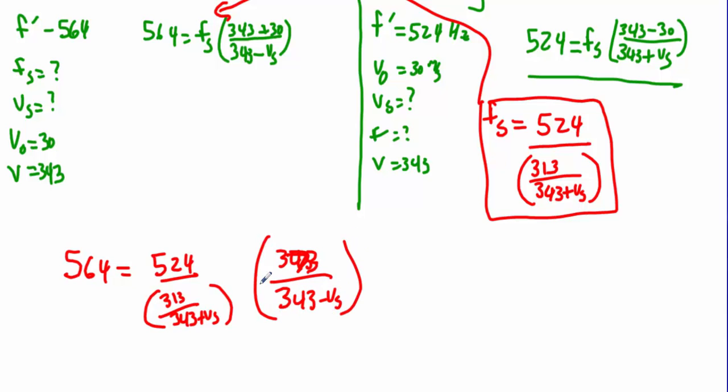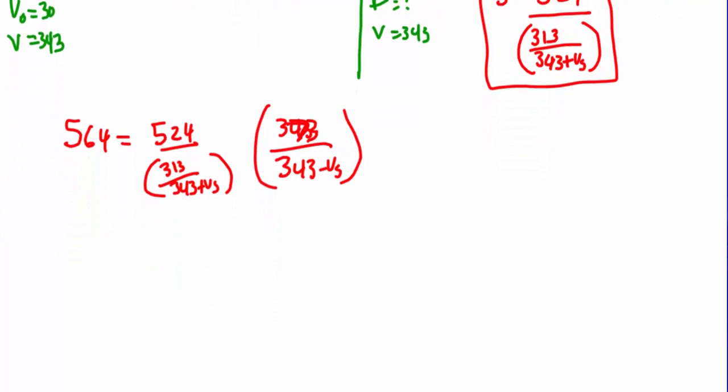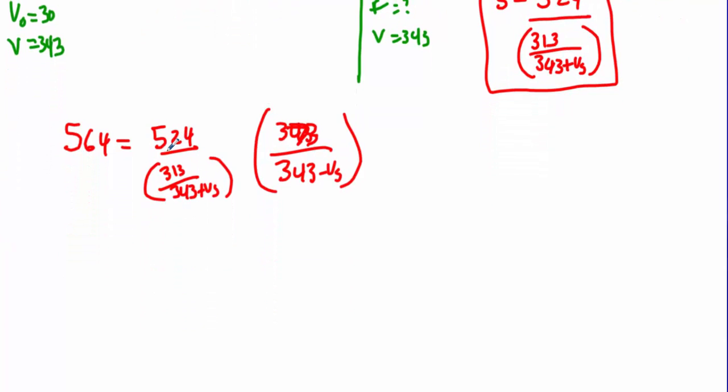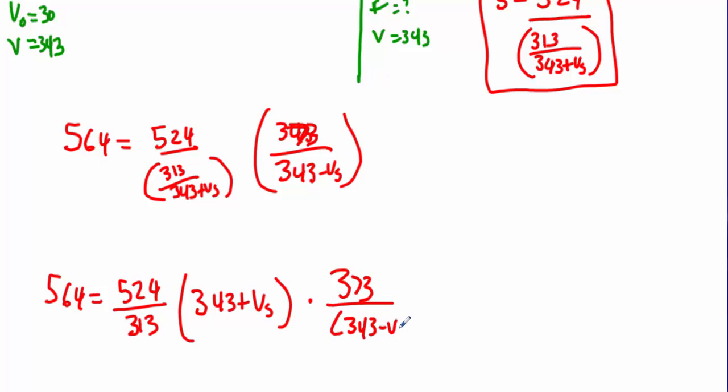Now this is the part where you have to be careful with your fractions. This is 524 divided by this fraction, which means invert and multiply. So 564 equals 524 over 313 times 343 plus v_s times 373 over 343 minus v_s. If these were the same sign they would cancel, but they're not. We were paying attention, so we're good.